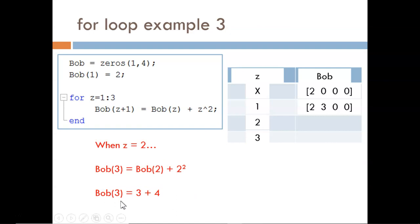The last time through, z equals 3 and the command reads like this. So a 16 is assigned to the fourth index in Bob.